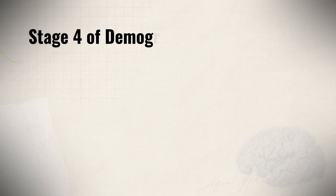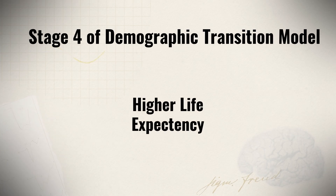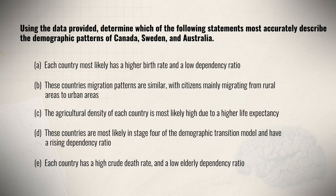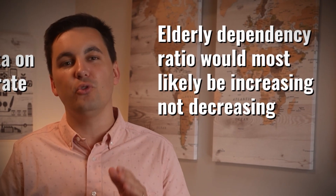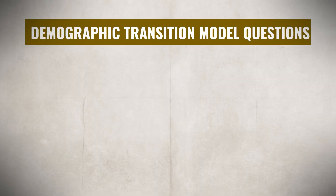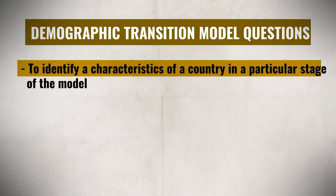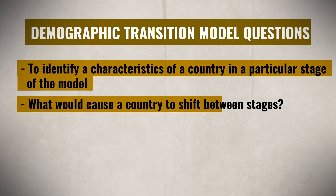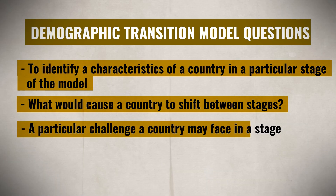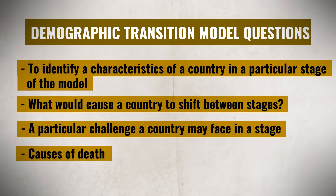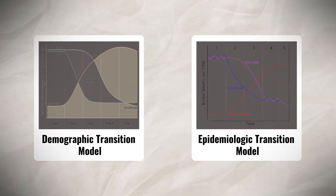Finishing up this question, answer D does sound right. Countries in stage four of the demographic transition model would have a higher life expectancy for both men and women, and as life expectancy goes up, we generally see the dependency ratio increase as well. We always need to read every answer — answer E would not be the best answer since we do not have data on the crude death rate, and the elderly dependency ratio would most likely be increasing, not decreasing. You might also see DTM questions ask you to identify characteristics of a country in a particular stage, what would cause a country to shift between stages, a particular challenge a country may face, or causes of death — which connects the demographic transition model to the epidemiologic transition model.